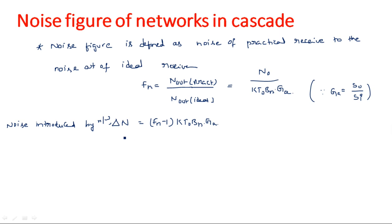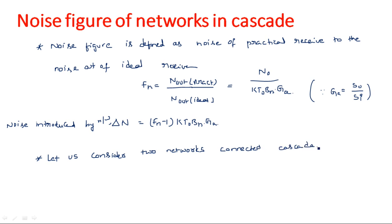Now with these points, let us find the overall noise figure when two networks are connected in cascade. Cascade means one network's output is connected to another network's input. We consider these two networks keeping the noise bandwidth the same.